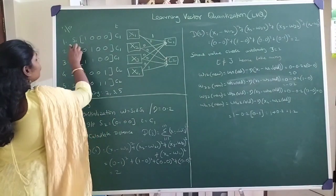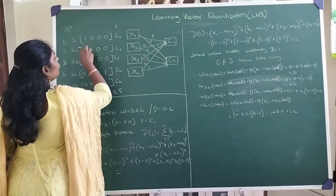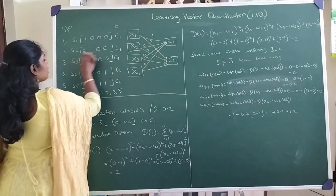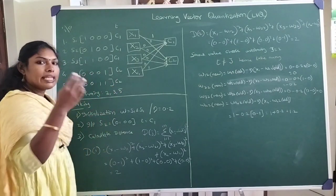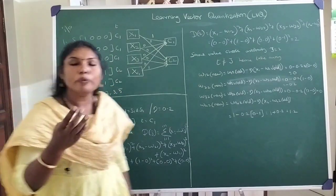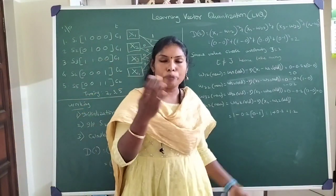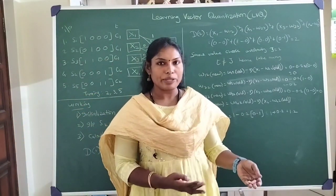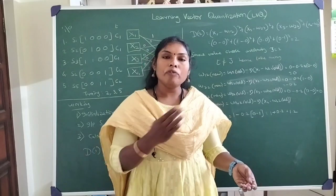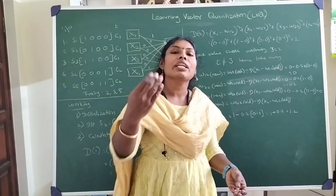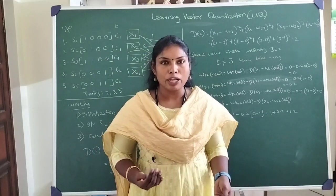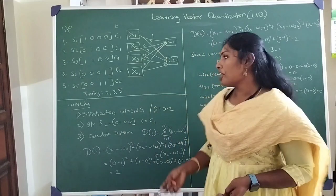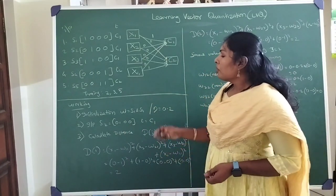For each input pattern — X1, X2, X3, X4 — we know which cluster it actually belongs to. So for the first input it belongs to C1, and similarly for others. With that we proceed to the training process.